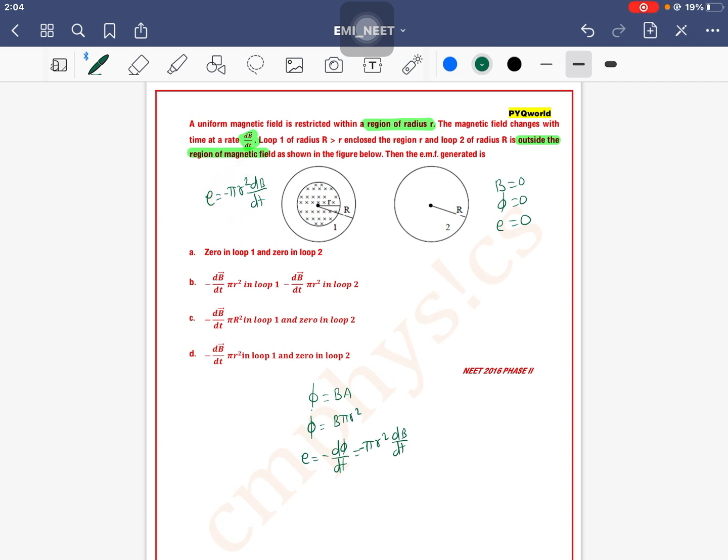In loop one, minus π r² dB/dt, and in loop two it is zero. Option D is the correct one.